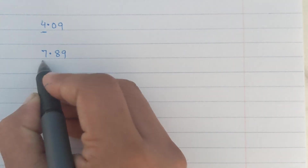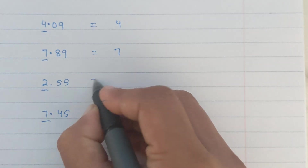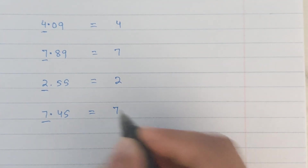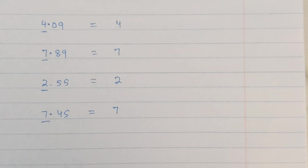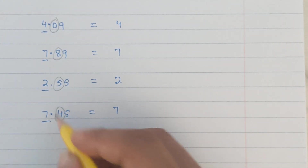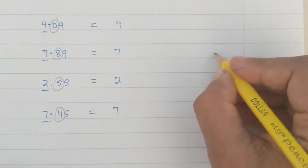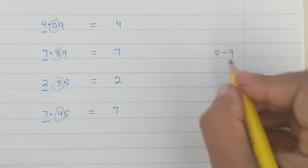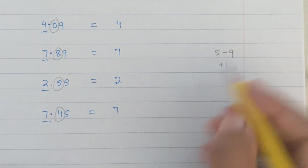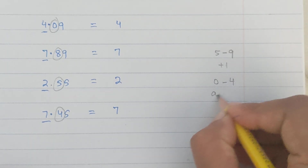Let's start from the very first step: identify the whole number. Our whole numbers are 4, 7, 2, and 7. Now we look for the digit right after the whole number — the very first decimal place — which are 0, 8, 5, and 4. A special digit means it is between 5 and 9. If it is between 0 and 4, it is not a special digit and we keep the whole number as it is.